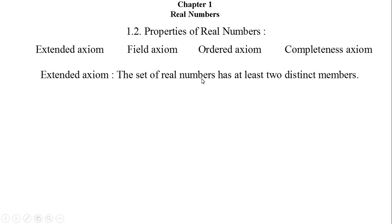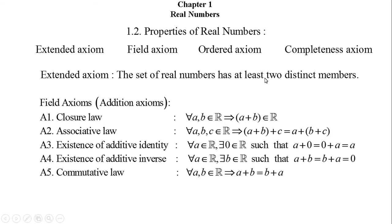First, the extended axioms: the set of real numbers has at least two distinct members. Next, the field axioms. Within field axioms, I will first discuss the field addition axioms. There are five field addition axioms: the closure law, associative law, existence of additive identity, existence of additive inverse, and commutative law.